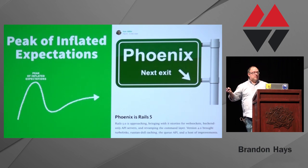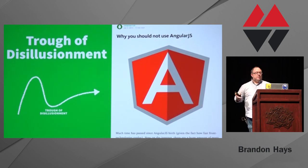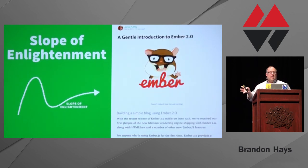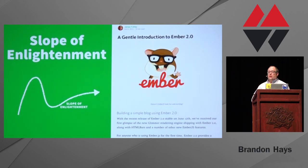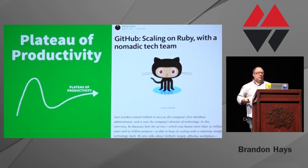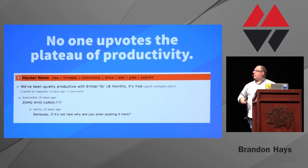Then we hit the peak of inflated expectations — suddenly it's all anyone's talking about. Performance, security, new capabilities you never dreamed of are all yours if you just adopt this new tool. At some point, that rocket ride ends and you find yourself in the trough of disillusionment. The tech doesn't meet those outrageous expectations — it's not a panacea — and you get people loudly quitting and wailing and gnashing of teeth. If the tech survives, you reach the slope of enlightenment, where tooling and learning materials get better and a community forms. Finally, there's the plateau of productivity, where people just become quietly productive and don't really see the need to talk about it. You will never see on Hacker News: 'Yeah, we've been quietly productive with Ember for about 18 months. It's pretty nice.'